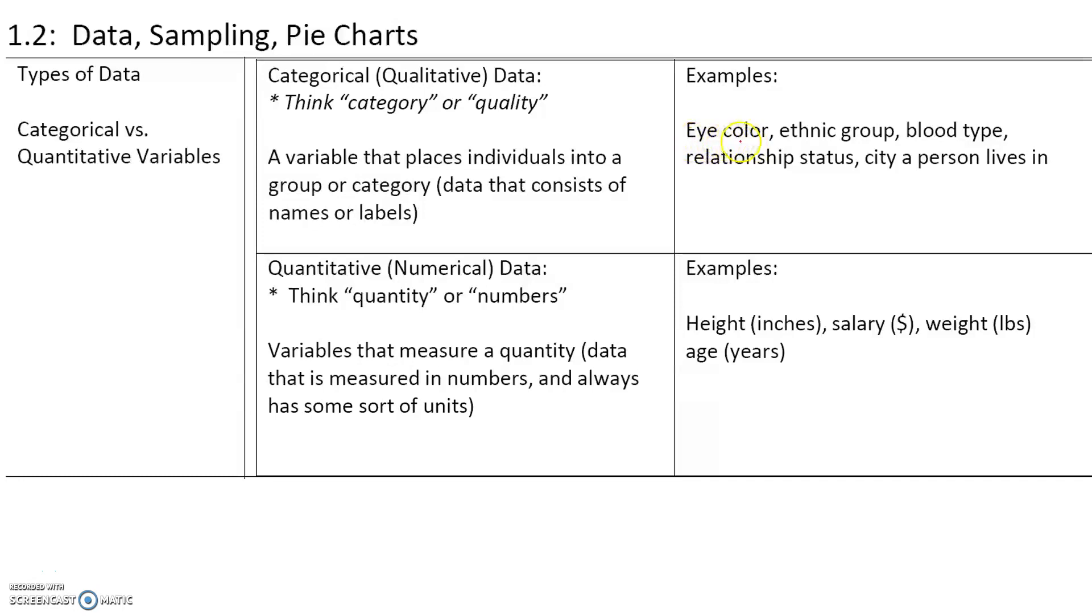For example, eye color—we can label eye colors as being brown, green, black, etc. We've got ethnic groups, blood types, relationship status—we can label relationship status as single, married, in a relationship, etc. The city a person lives in—these are all examples of categorical variables.